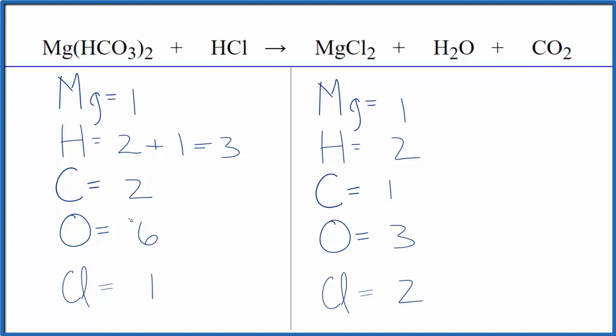I like to leave the oxygens until last when I balance equations. Oxygens and hydrogens, I usually leave those to last. Let's first just balance the carbons here. We could put a two here, one times two. That would balance the carbons.